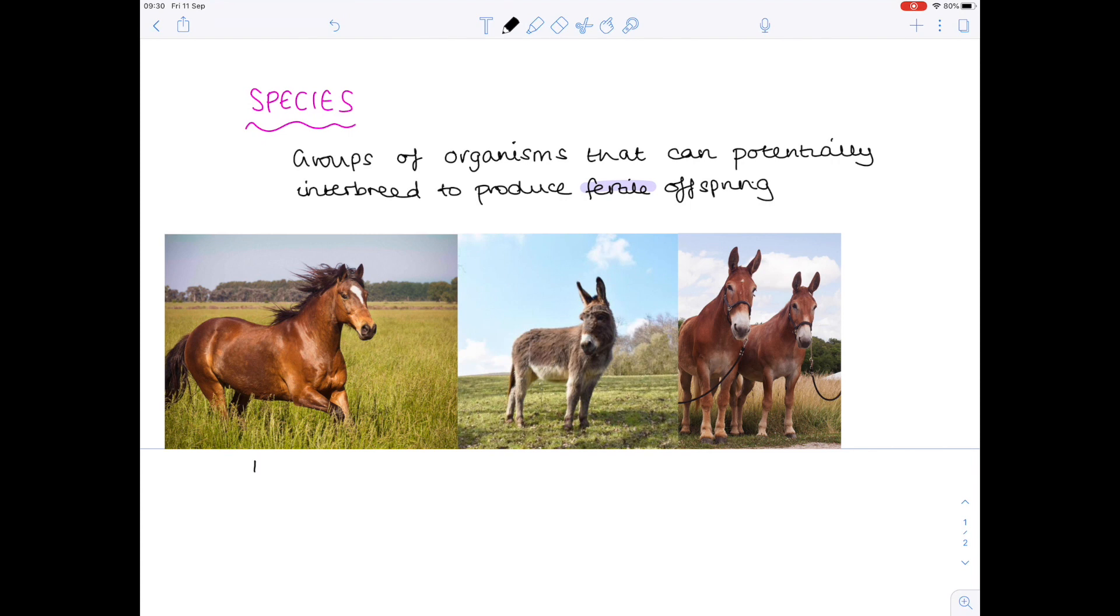So, in this first picture, we have an ordinary horse, and in the second picture, we have a donkey. Now, the reason why horses and donkeys are separate species is, yes, they can interbreed. So, at that point, we're hitting this part of the definition. However, unfortunately for them, when they interbreed, they produce what's known as a mule, which we can see in the third picture.